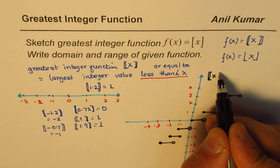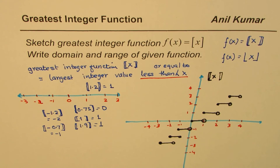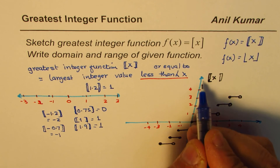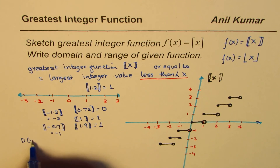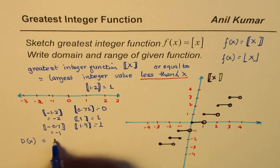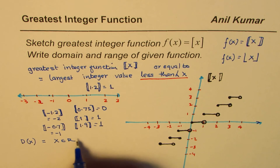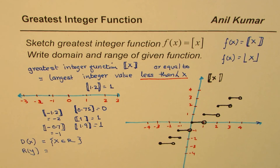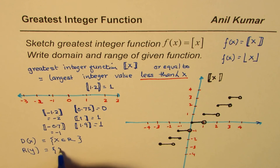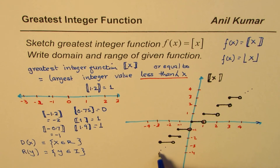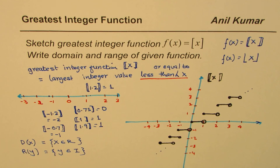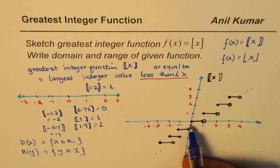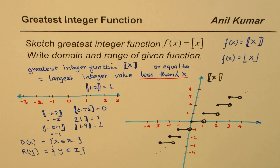That is how we sketch the graph of the greatest integer function, which in books is written as ⌊x⌋. It is a step function where the filled-in circle is on the left side. Now domain and range: the domain is all real numbers — x belongs to ℝ. The range is all integers — y belongs to ℤ — since the output always jumps to integer values.